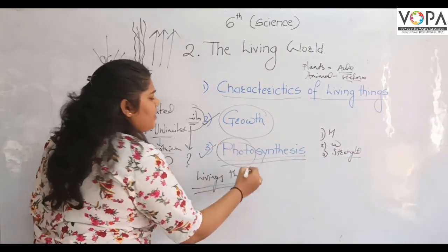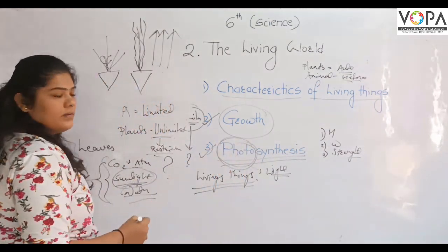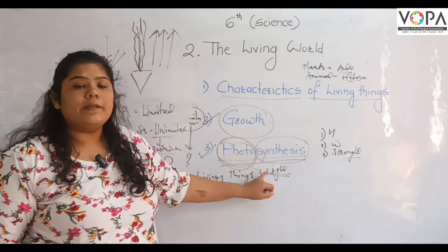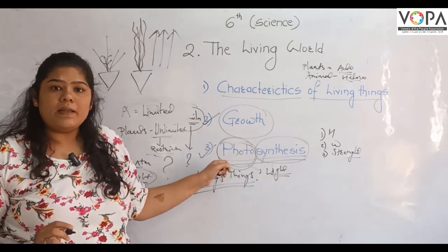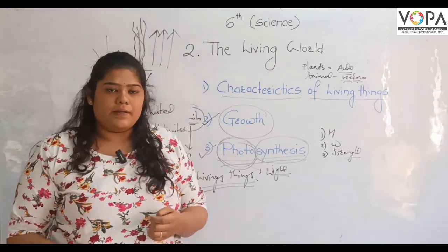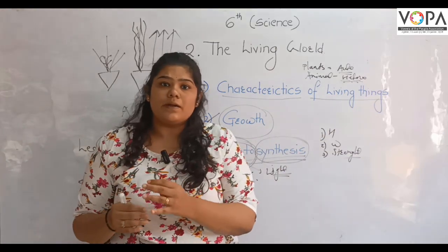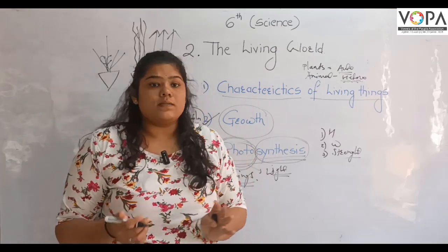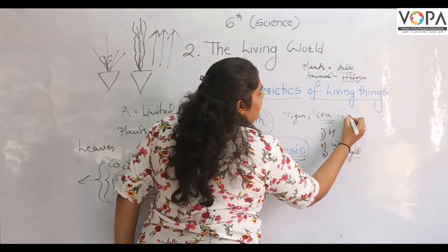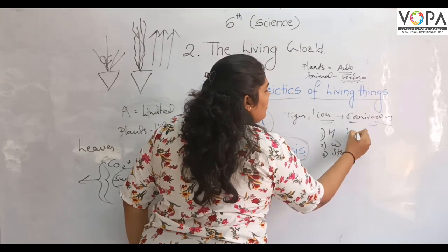Photo means light — that is, sunlight. Synthesis means to build up, so photosynthesis means to build food using sunlight. Animals cannot make their own food, so they are called heterotrophs. Animals like tigers and lions are carnivores — they eat other animals — so they are also heterotrophs.